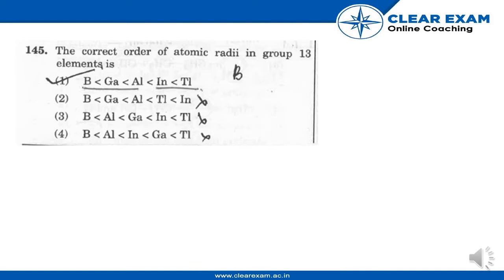Hello everyone. Here is question number 145: the correct order of atomic radii in Group 13 elements. Option 1: B < Ga < Al < In < Tl. Option 2: B < Ga < Al < Tl < In. Option 3: B < Al < Ga < In < Tl. Option 4: B < Al < In < Ga < Tl.